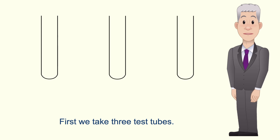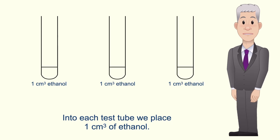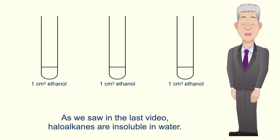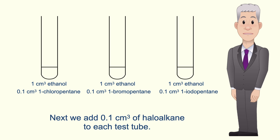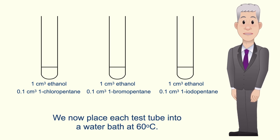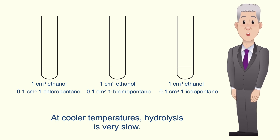First we take three test tubes and into each test tube we place 1 cm³ of ethanol. As we saw in the last video, haloalkanes are insoluble in water, so the ethanol acts as a solvent allowing the haloalkanes to mix with aqueous solutions. Next we add 0.1 cm³ of haloalkane to each test tube. We now place each test tube into a water bath at 60°C. At cooler temperatures, hydrolysis is very slow.